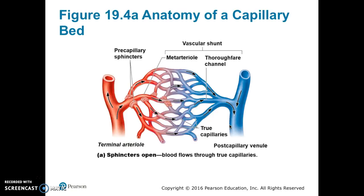The thoroughfare channel is the intermediate between the capillary and the venule, and it feeds into the post-capillary venule that drains the bed. Looking at this figure of a capillary bed, there is a terminal arteriole that feeds into the meta-arteriole, which connects directly with the thoroughfare channel to create the vascular shunt. Off of the meta-arteriole are the true capillaries. Blood flows into the true capillaries when the pre-capillary sphincters are open; if they are closed, blood flows only through the vascular shunt made up of the meta-arteriole and thoroughfare channel.